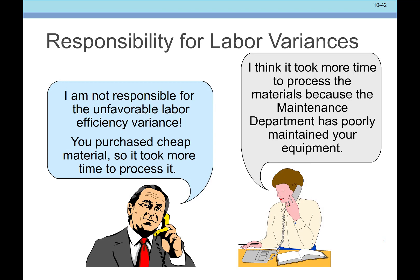Again, Charlie and Mabel point fingers: Charlie says he's not responsible for unfavorable labor efficiency because she purchased cheap materials that took more time to process. She says it took more time because the maintenance department poorly maintained the equipment. He could be right, she could be right. We might start by having her get better materials and see if efficiency improves. If not, then maybe equipment maintenance needs to be addressed.